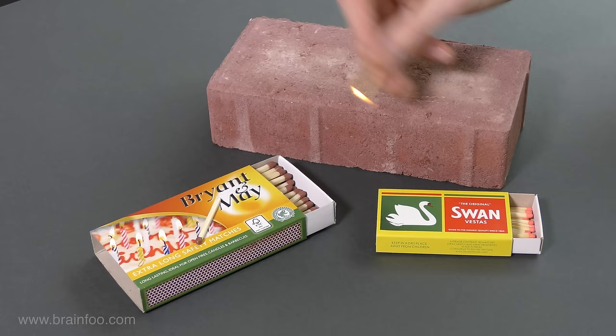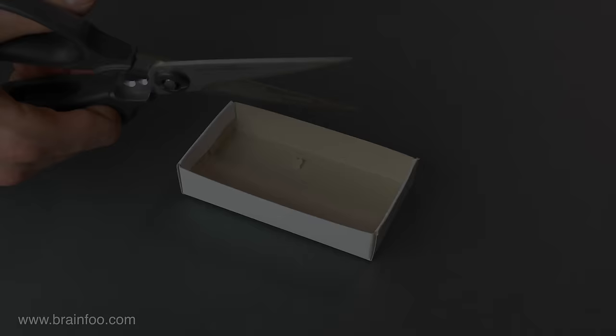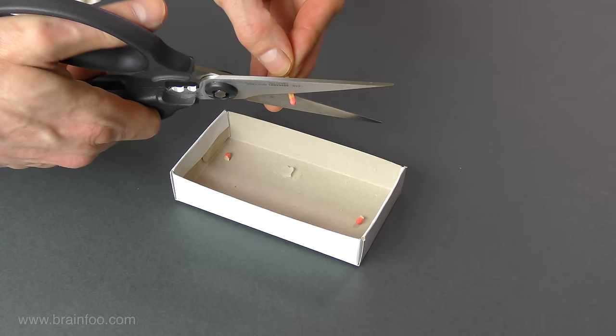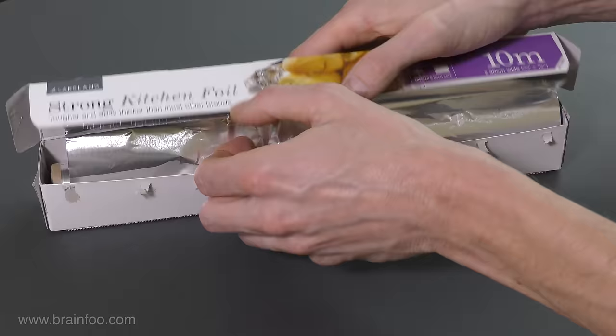Pretty much any type of match will do, but I had the most consistent results and longest range with the Strike Anywhere matches as against the Strike On Box only variety. The first thing we need to do is harvest some matchheads for our rocket engine. That's done by simply cutting away the unwanted wooden part of the match, close enough to the tip so that we're not carrying unnecessary weight but not so close that the matchhead breaks up.